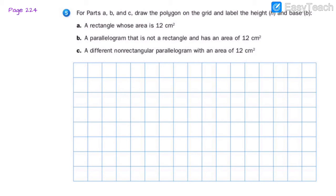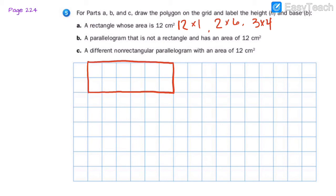For number five, parts A, B, and C: draw a polygon on the grid and label the height and base. Part A: a rectangle whose area is 12 centimeters squared. What are two numbers that multiply to make 12? We know 12 and 1, 2 and 6, and 3 and 4. I'm going to go with 2 by 6 to make a rectangle. Here we've got my 2 by 6 rectangle — my base is 6 and my height is 2, labeled A.